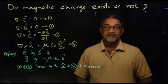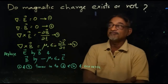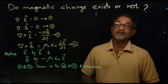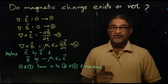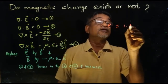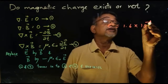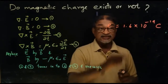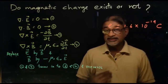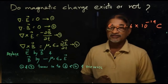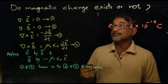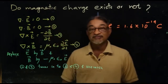In this class, we are discussing a new problem: do magnetic charges exist or not? As we know, we have the electric charge E equal to 1.6 × 10⁻¹⁹ Coulomb. So electric charge exists. But is there any chance for a magnetic charge? We have to find whether it exists or not by using Maxwell's equations.